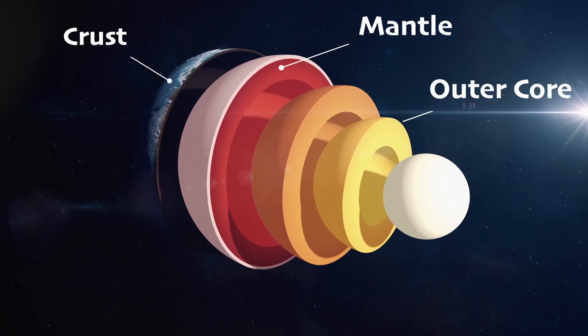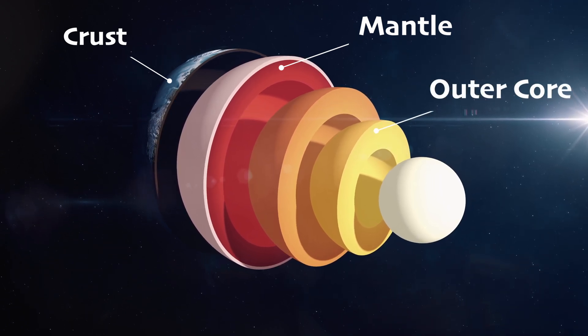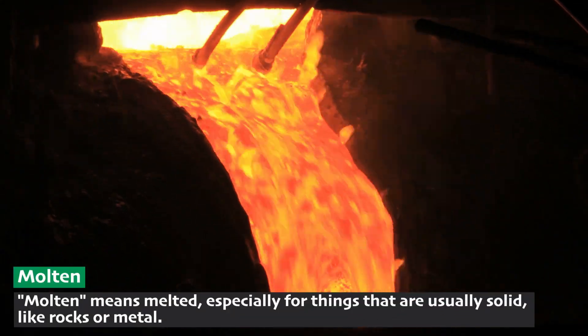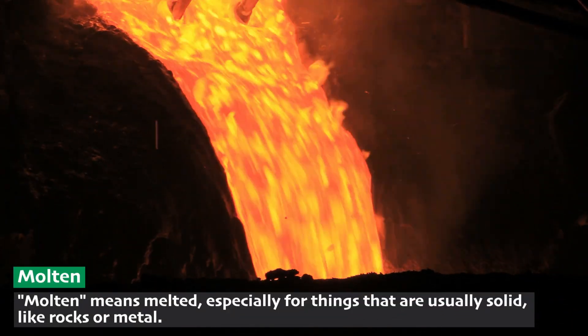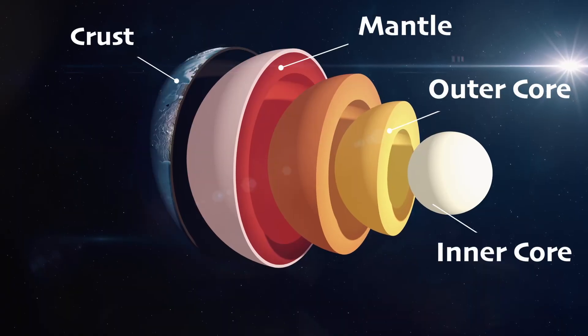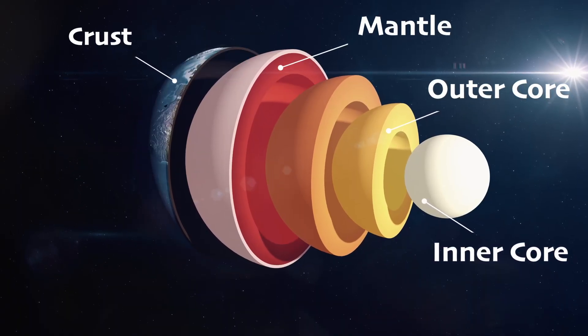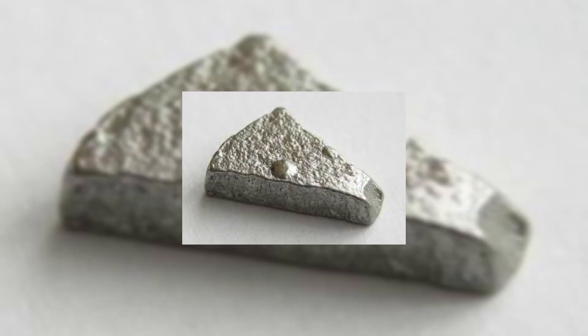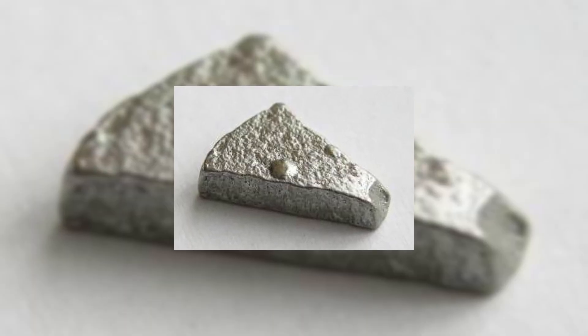Deep inside the Earth is the outer core, which is actually liquid. It's like a sea of molten metal swirling around the solid inner core, which is the very center of the Earth. Similar to the peach pit. The inner core is super hot and made of solid metal because the pressure there is incredibly high.